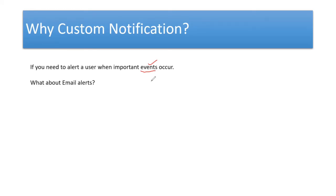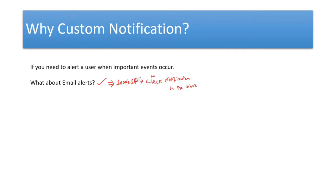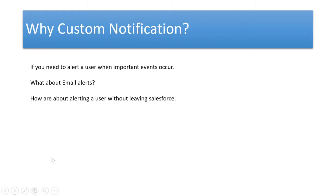For example, if there is an important deal that has happened or a case that has been created on an important account, these events should be notified to the user so they can act upon them. If you have an email alert configured, you have to leave Salesforce to go check the notification in your mailbox. If you are doing important work in Salesforce, this process might not always be feasible. That is where we have the option called custom notifications.